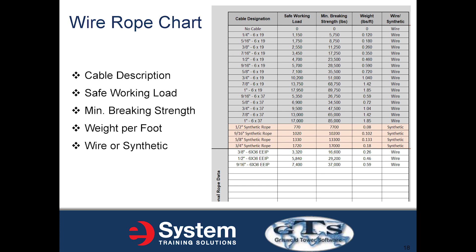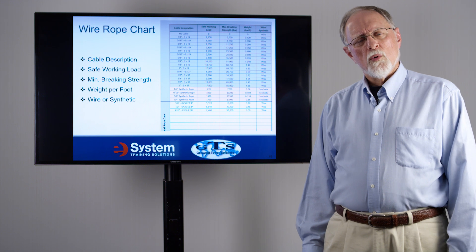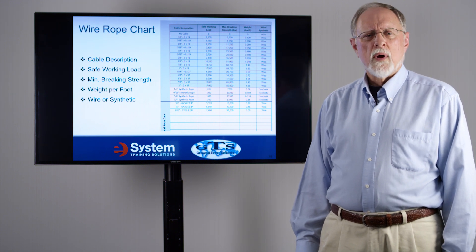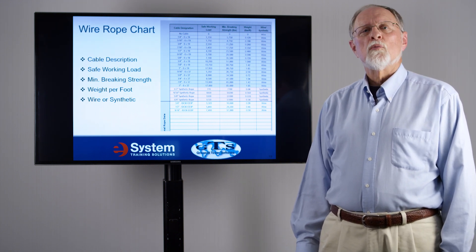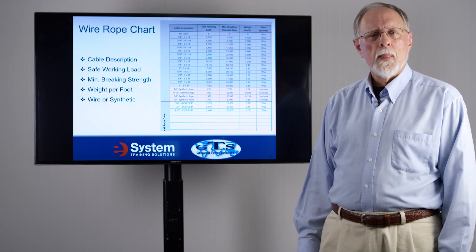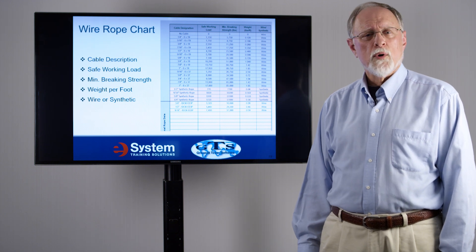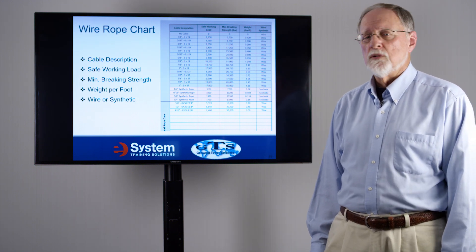The wire rope chart is where you enter the cable description, the safe working load, the minimum braking strength, the weight per foot for each cable, and whether wire or synthetic material is being used. This is where the program determines if you're putting too much load on a particular cable or hoist, and where it calculates the weights.